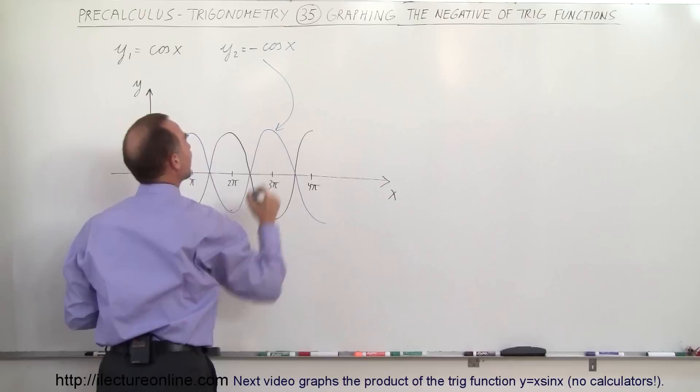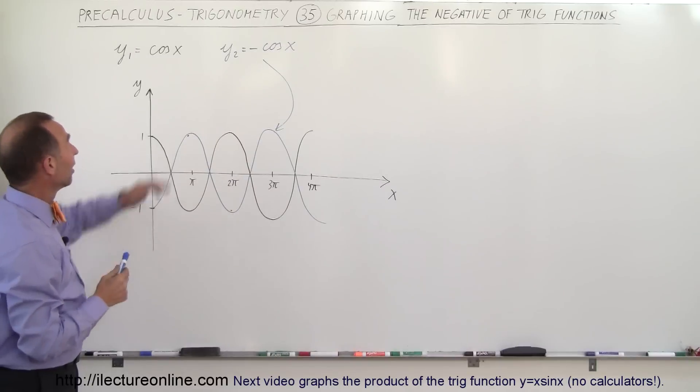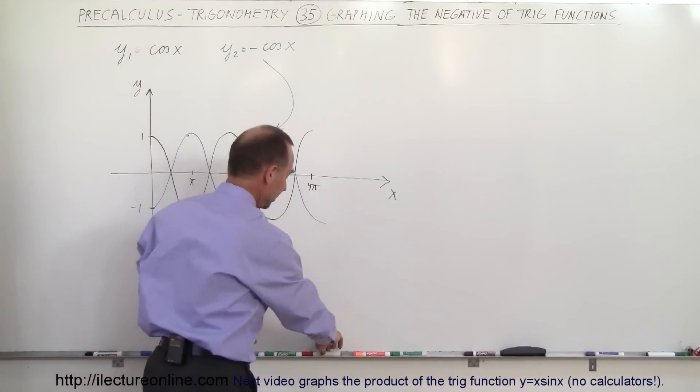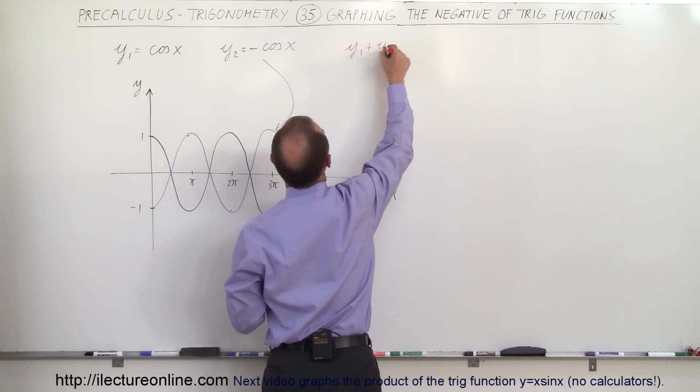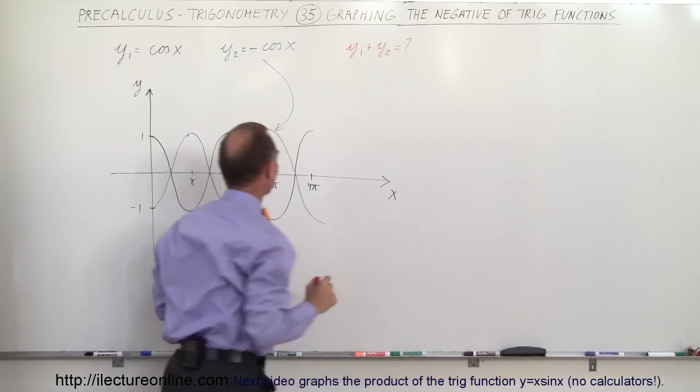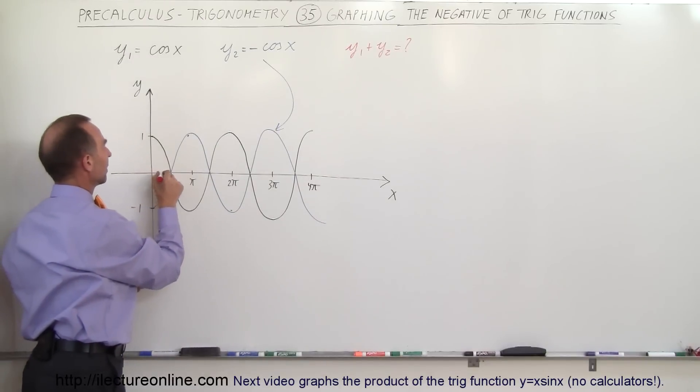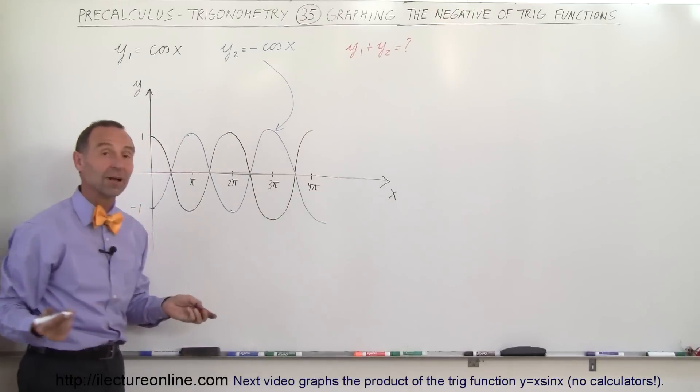So this here is the negative of the original function. Now what would happen if you add the positive and negative function together? For example, what is y1 plus y2 equal to? Notice that if you add them up together, you would simply get zero all the way across because they would simply cancel each other out, which makes sense.